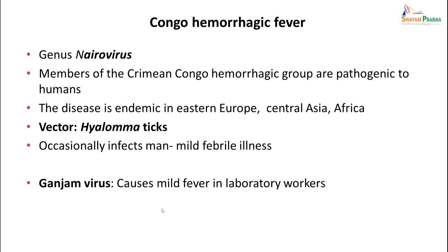Congo hemorrhagic fever is caused by genus Nairovirus. It is a member of the Crimean-Congo hemorrhagic fever group, pathogenic to humans. The disease is endemic in Eastern Europe, Central Africa, and Asia; the vector is Hyalomma ticks. They occasionally infect man and cause mild febrile illness. Ganjam virus can also cause a mild fever-like illness, which has been seen in laboratory workers, but is not a common occurrence.